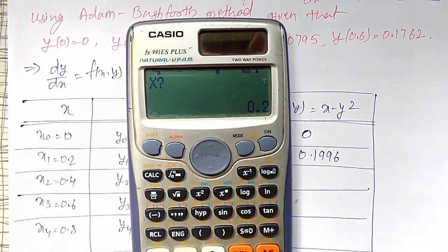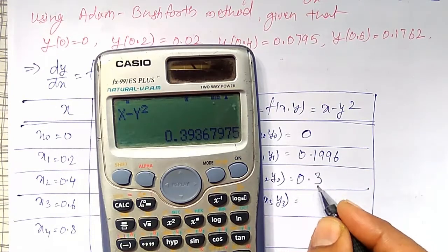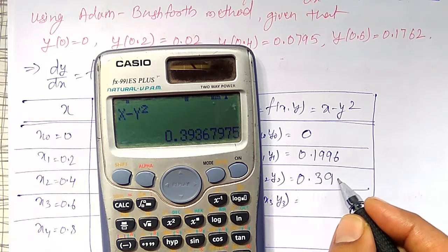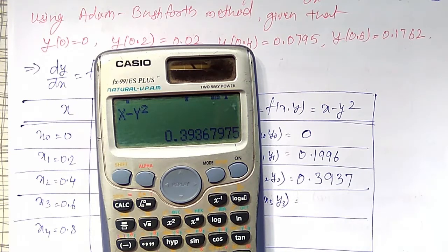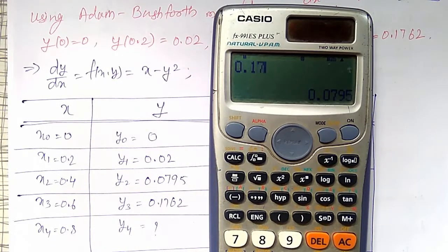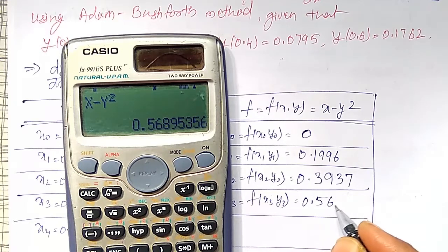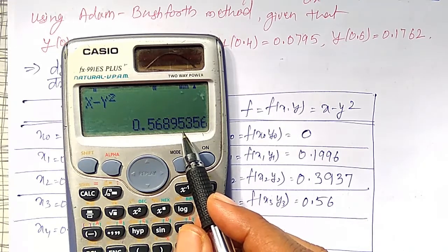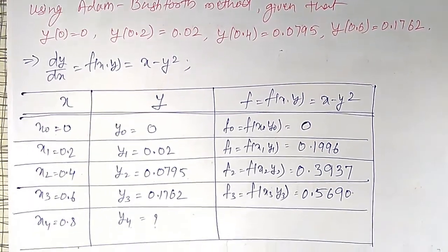Then pressing equal to again, x value is 0.4 and corresponding y value is 0.0795, and equal to — I am going to get 0.3937 up to 4 decimal places (fifth decimal place is 7, so I round up). Next, equal to again, x value is 0.6, corresponding y value is 0.1762, and I get 0.5690 (fifth decimal place is 5 or more, so I round up). These are my f0, f1, f2, f3.